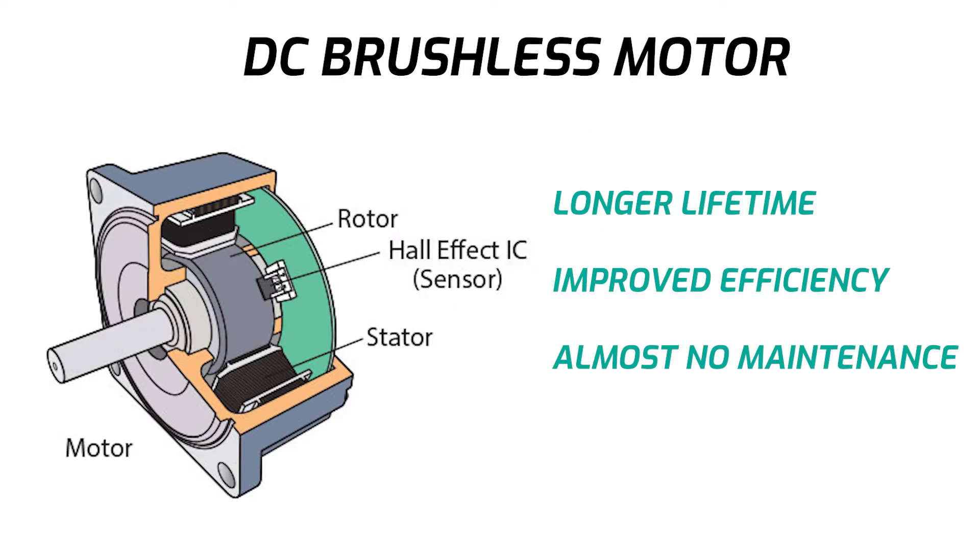improves their efficiency, and means they require almost no maintenance. AC motors, on the other hand, are usually brushless, but there are still reasons why people choose DC brushless motors more often.